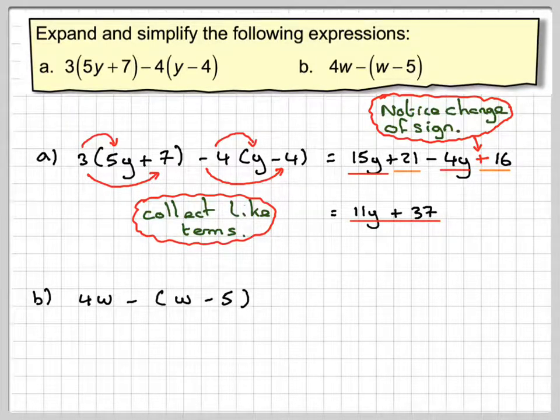We've got to be particularly careful in the next one because this 4w is not in a bracket. Then we're going to minus this bracket. So maybe it's better to think of this as 4w minus 1 times this bracket.